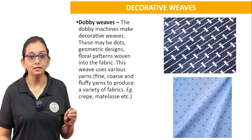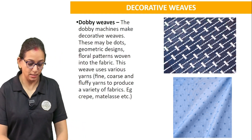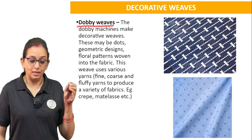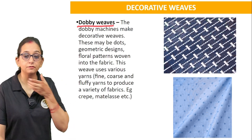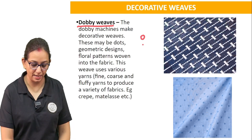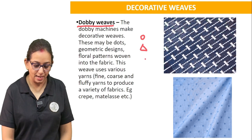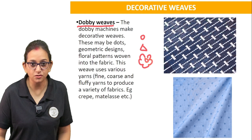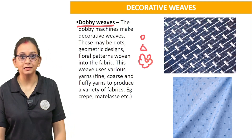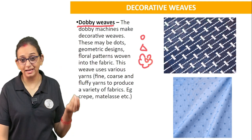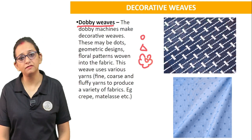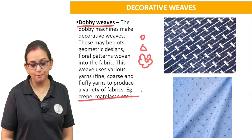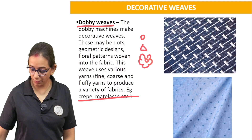Next we come to certain decorative weaves done for decorative purposes. One of them is the dobby weave. Dobby weaves are beautiful decorative weaves — they may be dots, geometric designs, or floral patterns woven onto the fabric. They use fine yarn, coarse yarn, or fluffy yarn to produce a variety of fabrics like crepe or metal fabric.